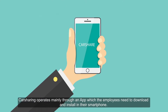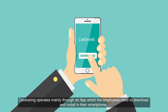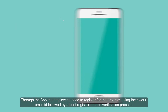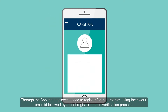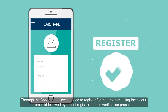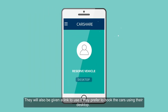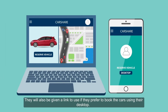Car sharing operates mainly through an app which the employees need to download and install on their smartphone. Through the app, the employees need to register for the program using their work email ID, followed by a brief registration and verification process. They will also be given a link to use if they prefer to book their cars using their desktop.